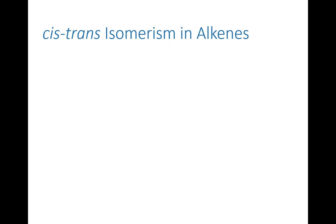In the last chapter we discussed the concept of isomers. The type of isomers we discussed, structural isomers, were defined as compounds which have the same molecular formula but different connections of atoms. Now there are other types of isomerism as well, and one of the more important types is what we call stereoisomerism.